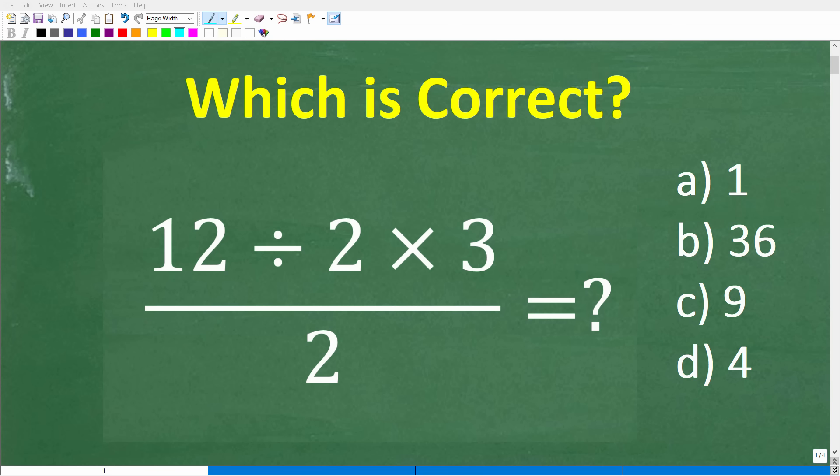All right, so the question is, which is correct? This is a multiple choice question, and the problem is 12 divided by 2 times 3 divided by 2. Our first choice, option A, is 1, B is 36, C is 9, D is 4. The only rule here is no calculators, but if you can figure this out, go ahead and put your answer into the comment section.